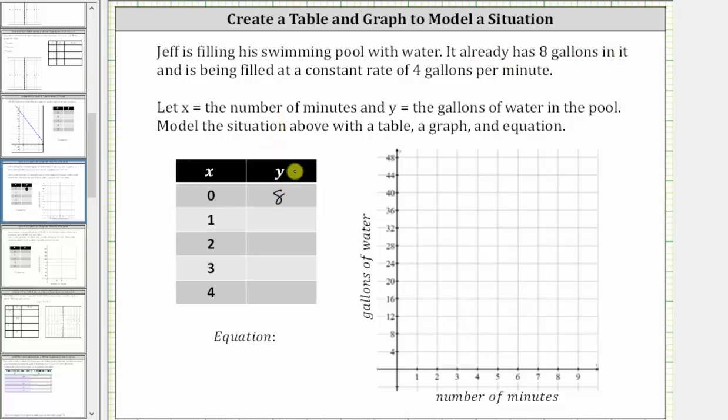Now because the pool is being filled at a rate of four gallons per minute, after each minute there will be four more gallons of water in the pool. Therefore when x is equal to one, the gallons of water in the pool is equal to eight plus four, which is 12. When x is one, y is 12.